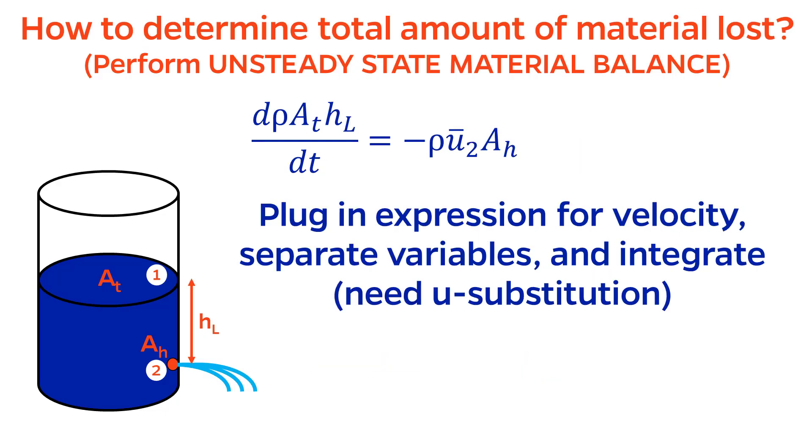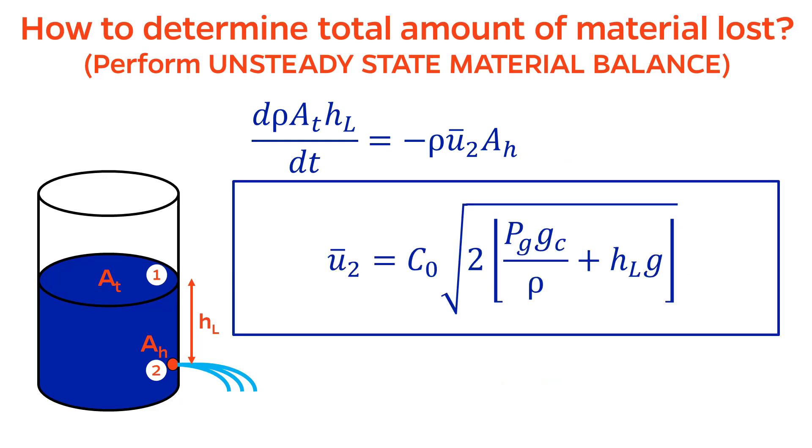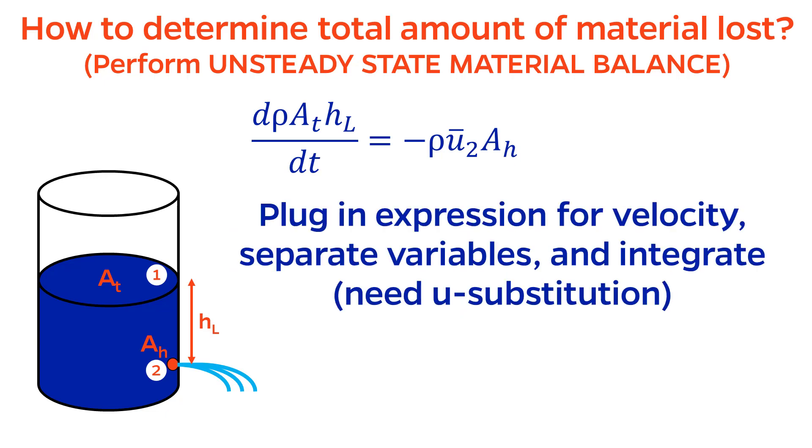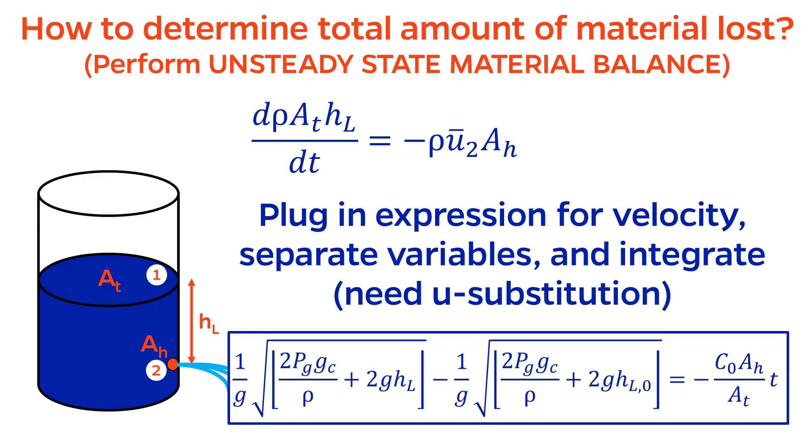Next, we can plug in that expression for velocity that we just derived. In case you need a refresher, this was that expression. Once I plug this in, everything is now constant except for HL, which is now the dependent variable. I can separate the variables and integrate. I'll leave the details for you to practice, but I'll give you the hint that it involves U substitution. Here is the result you should have gotten.